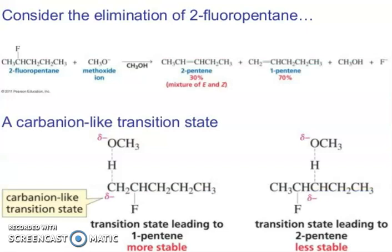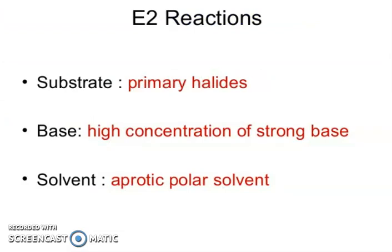Now, considering the elimination of 2-fluoropentane — and that is very important. It gave a 30% mixture of E/Z 2-pentene, but 70% 1-pentene. What happened here? A carbanion-like transition state: the transition state leading to 1-pentene is more stable, and the transition state leading to 2-pentene is less stable. Now, E2 reaction conditions: substrate — primary halide; base — high concentration of strong base; solvent — aprotic polar solvent.